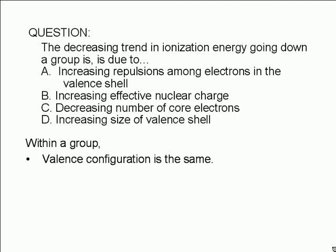In fact, since the valence shells get larger, the electrons would be further away from one another and that lessens the repulsions. Therefore, choice A is wrong.